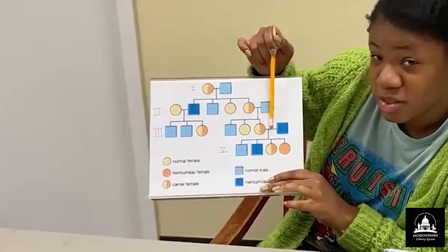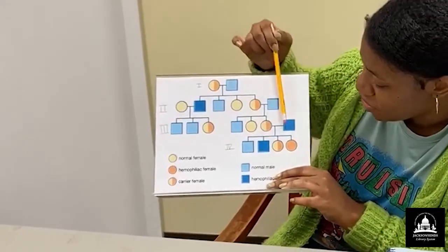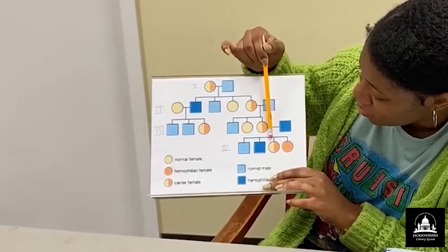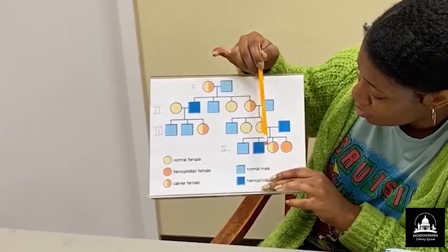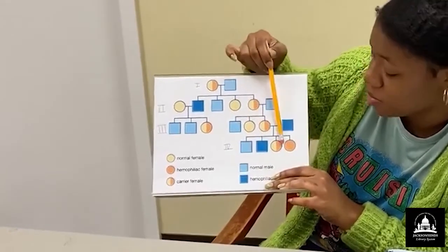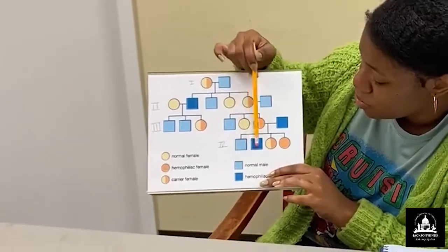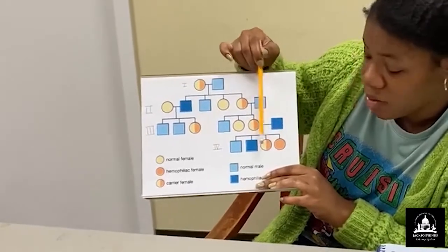All right. We get another horizontal line here. And this is going to be our fourth generation. Okay. And we're going to follow this vertical line down. And they have one, two, three, and four. Four offspring. So two males and two females.